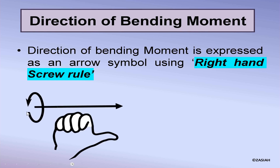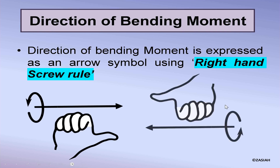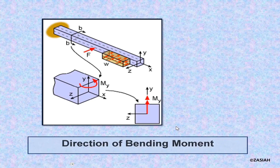Using the right-hand screw rule, you rotate your four fingers in the same direction as the arrow shown, and then the direction of the thumb will be the direction of the bending moment. On the right-hand side figure, the rotation is clockwise, so if you rotate your four fingers in the same direction of the arrow, then the direction of the thumb will give the direction of the bending moment.